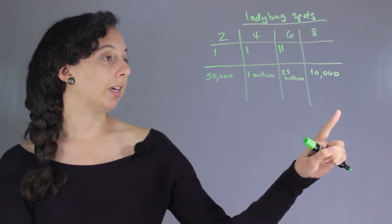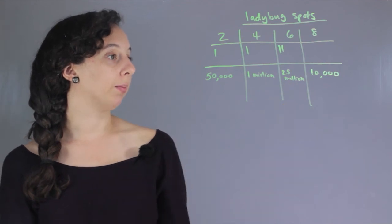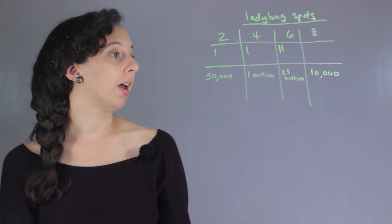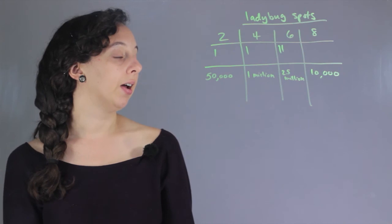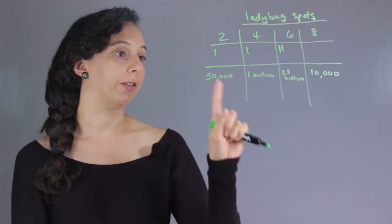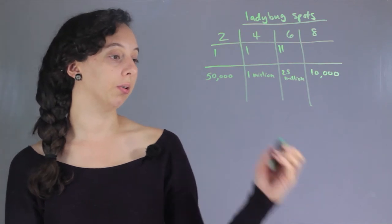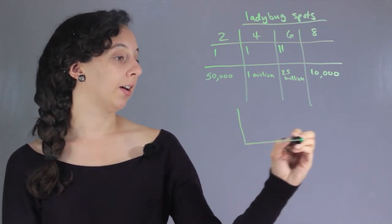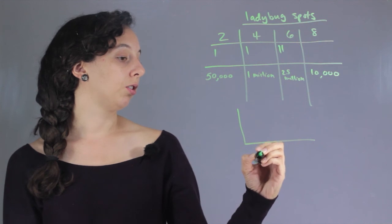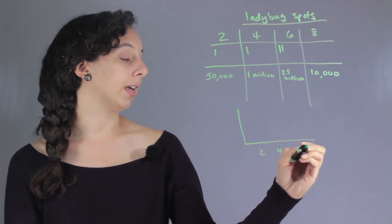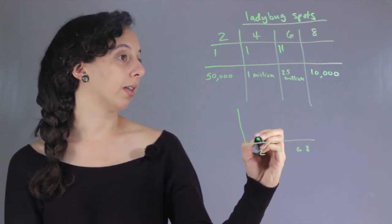You can see that 2.5 million ladybugs had six spots, only 10,000 had eight, 1 million had four, and 50,000 had two. Now you could actually start to interpret data and say if the options are two, four, six, and eight, it's going to look something like this.